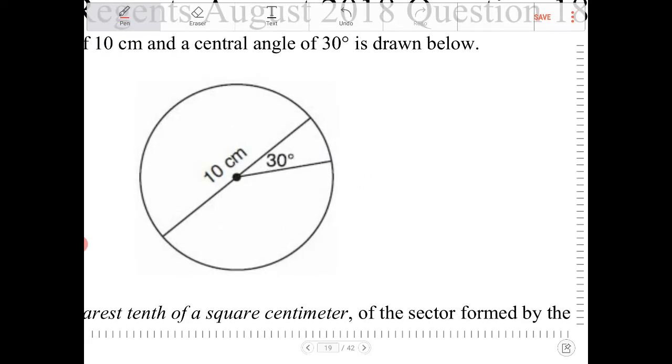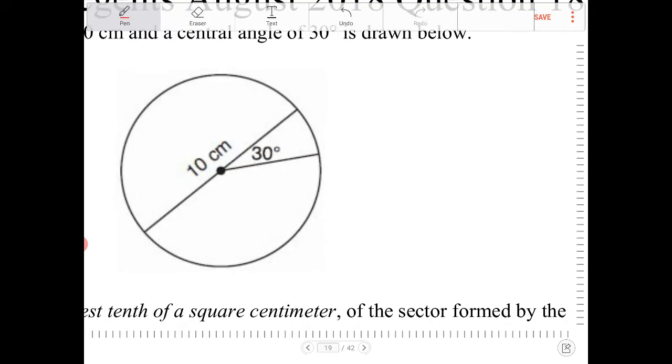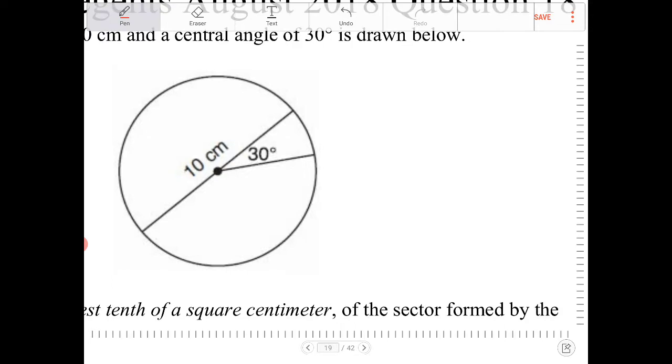So the sector is basically like a slice of the circle. It's this area that's in red. And what we want to do is find that area. You can solve this logically or you can use the area of a sector formula. I want to do both.